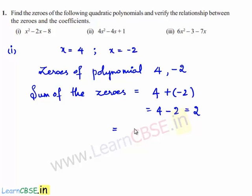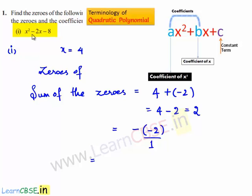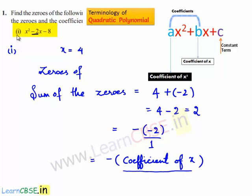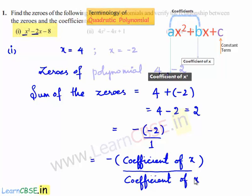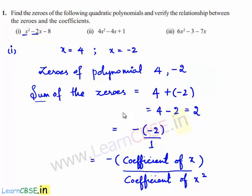This value of 2 can be written as minus of (minus 2) divided by 1. Here, minus 2 is the coefficient of x, and 1 is the coefficient of x². Therefore, we can say that the sum of the zeros is equal to negative of the coefficient of x divided by the coefficient of x².